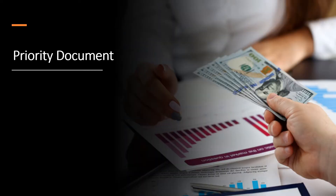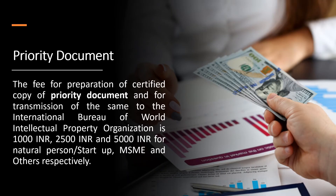The fee for preparation of a certified copy of the priority document and for transmission of the same to the International Bureau of the World Intellectual Property Organization is 1,000 rupees, 2,500 rupees, and 5,000 rupees for a natural person or startup, MSME, and others respectively.